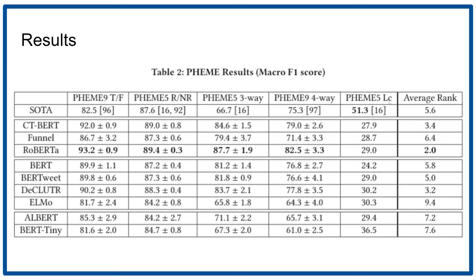There's also one split here that's a bit different from the others — the PHEME5-LC split. In this split, unlike the others where you split train and test randomly, the training set is four real-world events and the tweets about them, and then the test set is a completely different real-world event, so it's not a random split.